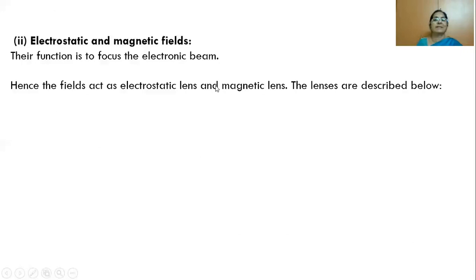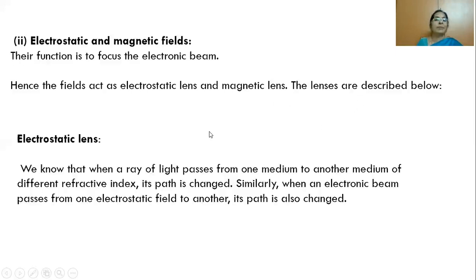Next, we discuss the functioning of the electrostatic field or magnetic field and how they act as a lens. Their function is to focus the electron beam. Hence, these fields act as an electrostatic lens or magnetic lens. First, we consider the electrostatic lens. We use an electrostatic field, but it functions like a lens, so we call it an electrostatic lens.